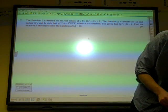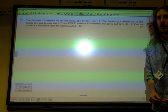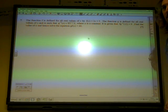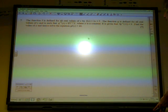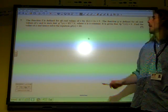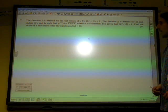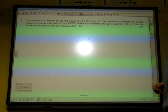Okay, we're on. The function f is defined for real values of x by f(x) = 2x + 5. The function g is defined when we're given the inverse of g. It's given that f(g^(-1)(12)) = 9. Find the value of a, hence solve the equation.